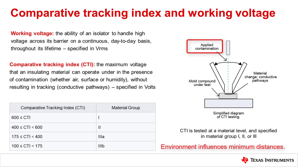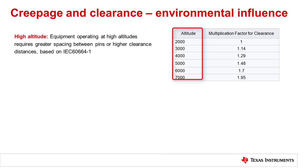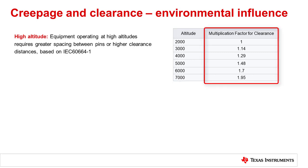Environmental conditions will also influence minimum creepage and clearance distances, with dependence on the end equipment use case, altitude, and environmental pollution degree. At higher altitudes of 2,000 to 5,000 meters above sea level, the air pressure is lower, causing peak overvoltages such as surge or temporary overvoltage to more readily cause arcing between isolator pins. Equipment operating at high altitudes require greater spacing between pins or higher clearance distances based on IEC 60664-1, which provides multiplication factors by which clearance must be increased at higher altitudes in order to protect from altitude-induced arcing.